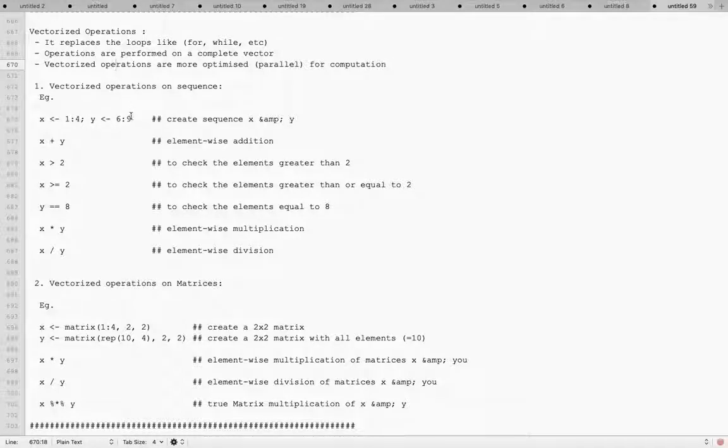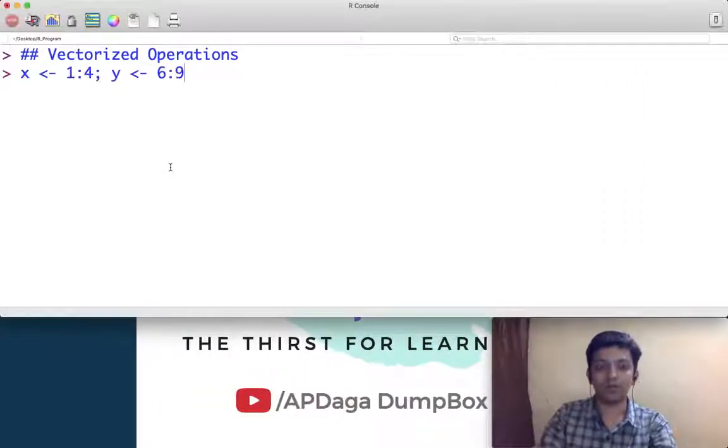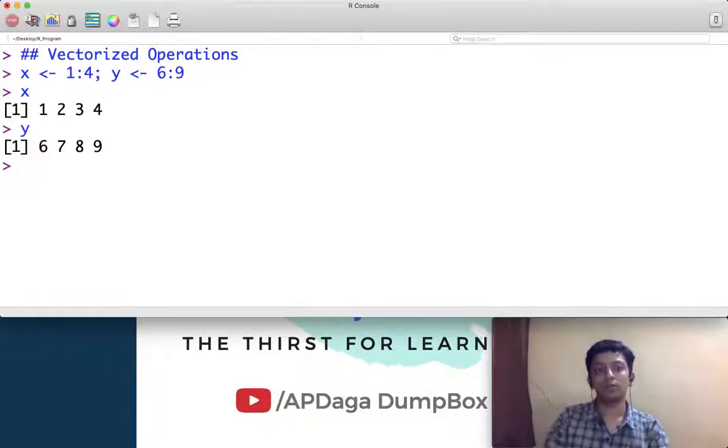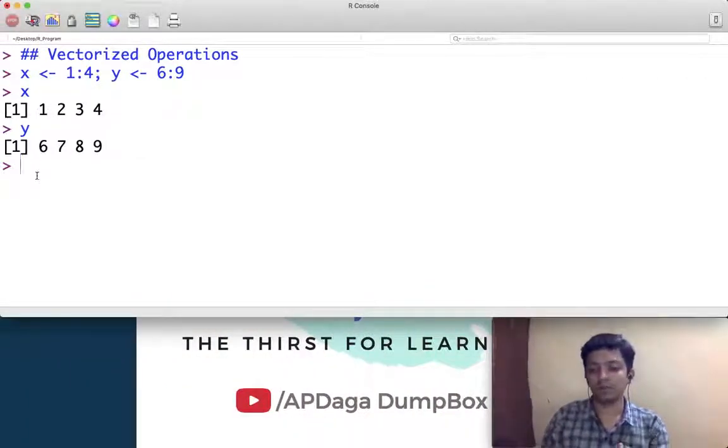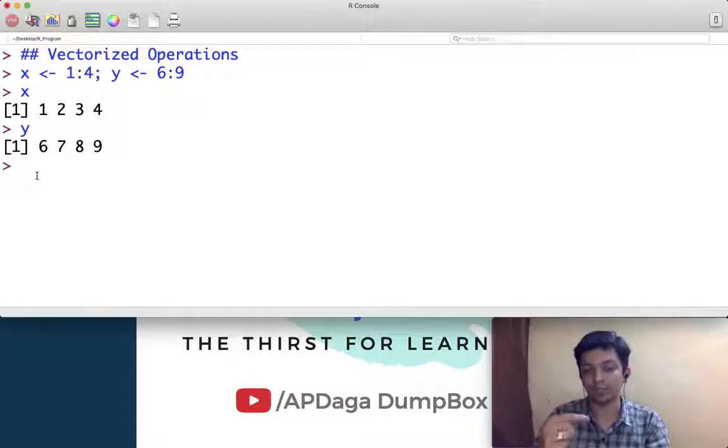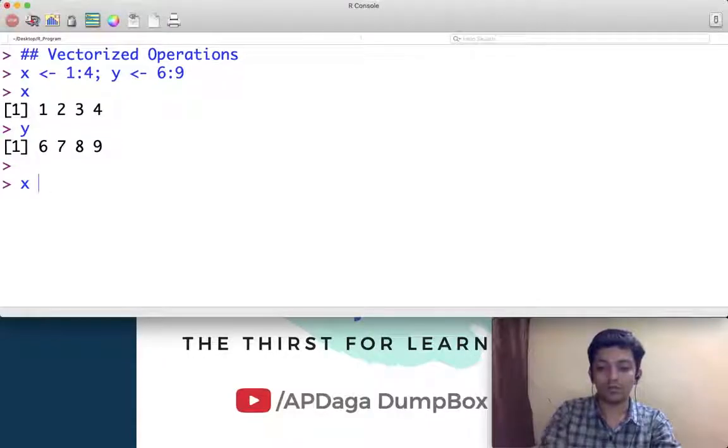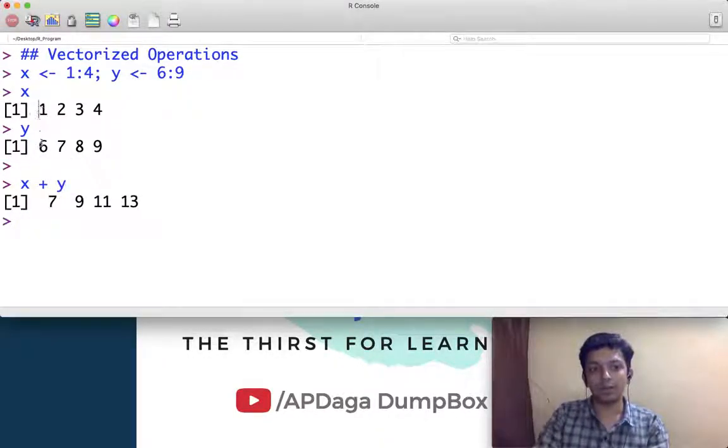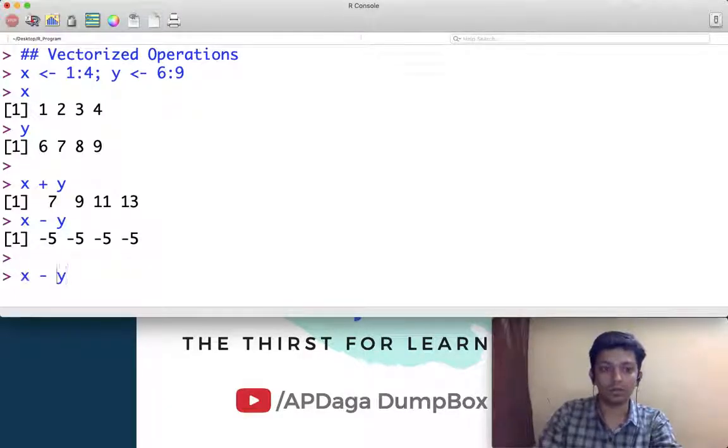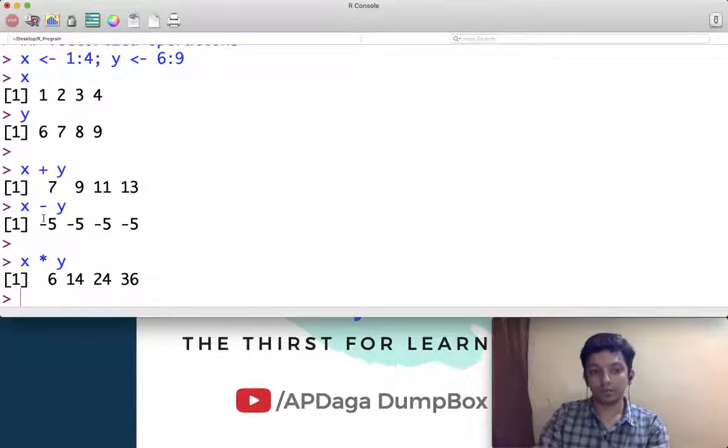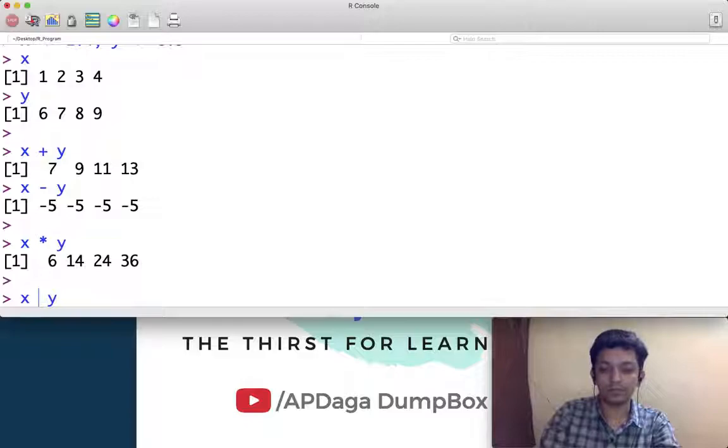Now let's begin and see how to do that. So right now we have two vectors: x and y. I will print the values of x and y. Now if I want to perform addition, in other languages we would create a for loop where we iterate from first element to fourth element. We can avoid all that. If we write x plus y, the output we get is element-wise addition: 1 plus 6 is 7, 2 plus 7 is 9, and so on. Similarly you can perform operations like subtraction, multiplication for element-wise multiplication, division, and so on.